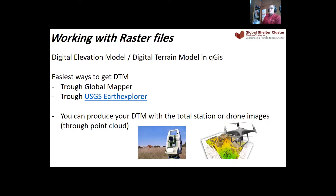There are two ways to find and download a digital terrain model to your computer. The easiest one is through Global Mapper, which we have already seen. The second, a little more complicated, is through Earth Explorer — and I will show you later why it is very important to know this Earth Explorer. But let's first start with the Global Mapper approach. Those rasters are not of very good quality.